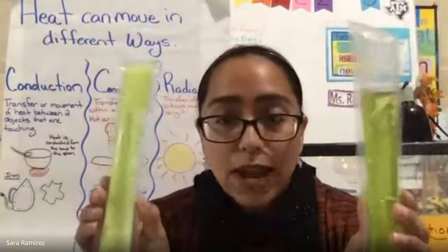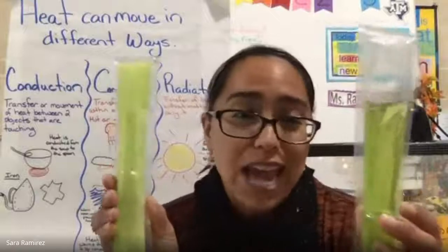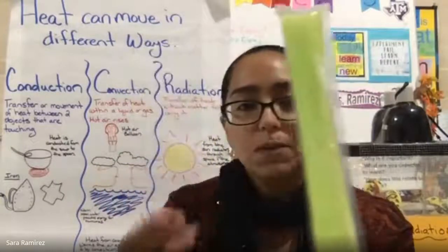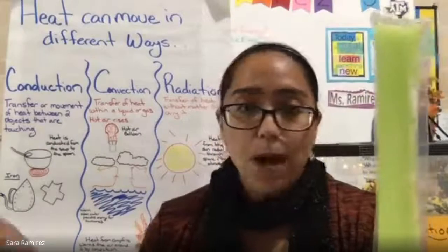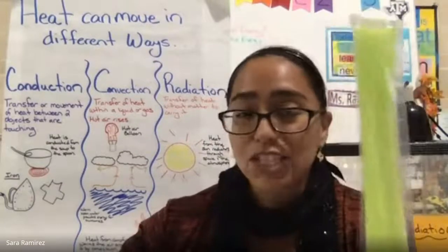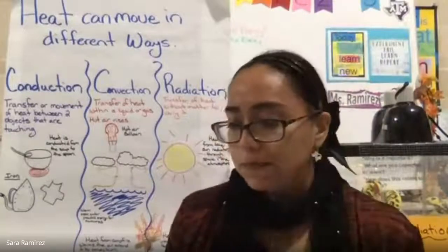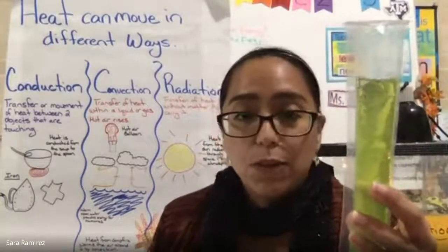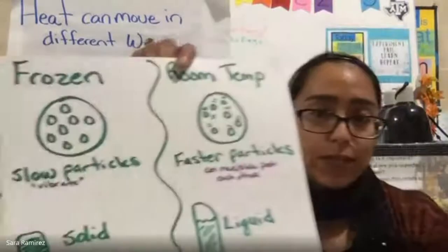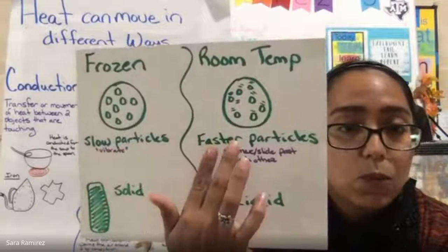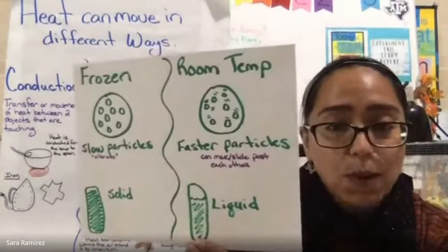Let's see how particle movement impacts states of matter. I have a frozen popsicle and a room-temperature popsicle. The frozen popsicle's particles are slow-moving — lower kinetic energy and lower thermal energy — which gives us a solid. The room-temperature popsicle's particles are moving faster, more fluid, which gives us a liquid. We can compare the particle movement of a cold object versus a warmer object and wonder: what would the particles of a gas look like?